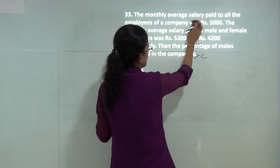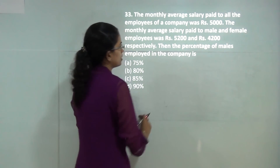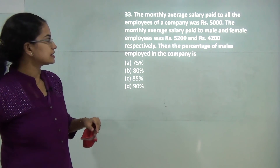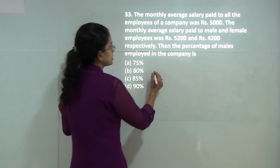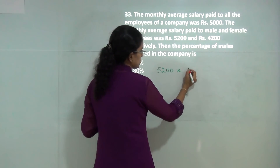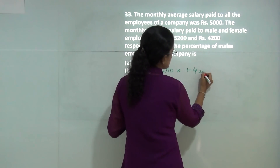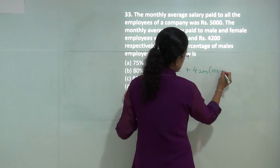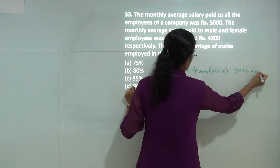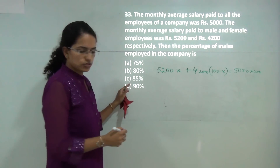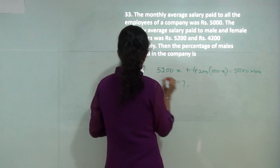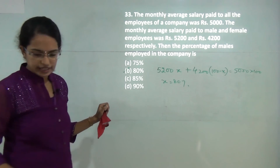The next question gives the monthly average salary as 5000. Let the number of males be x. So 5200x plus 4200 times (100 minus x) equals 5000 times 100. Solving for x gives x equals 80 percent. So 80 percent would be the correct answer.